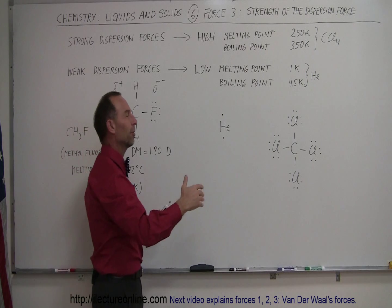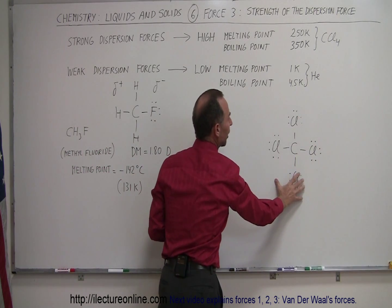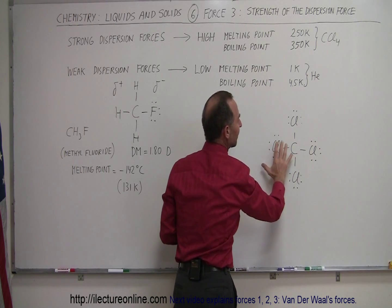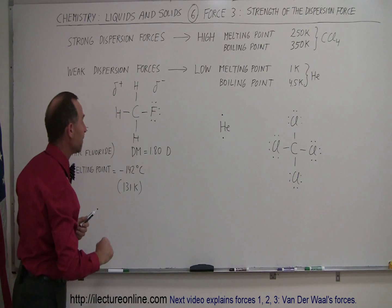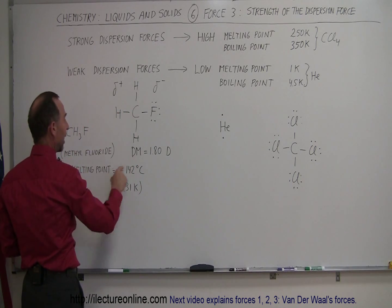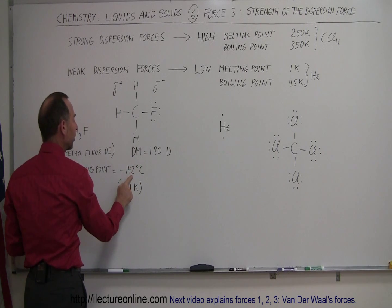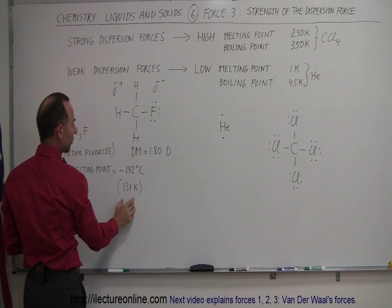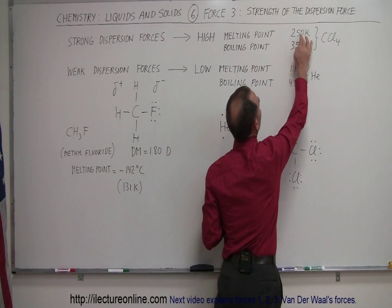Or I should say, the movement of the electron clouds causes temporary polarization, creating dispersion forces. That's a better way to say it. And yet this polarized molecule with a very high dipole moment of 1.8 has a melting point at minus 142 degrees centigrade, which is 131 Kelvin - much lower than the melting point of carbon tetrachloride.